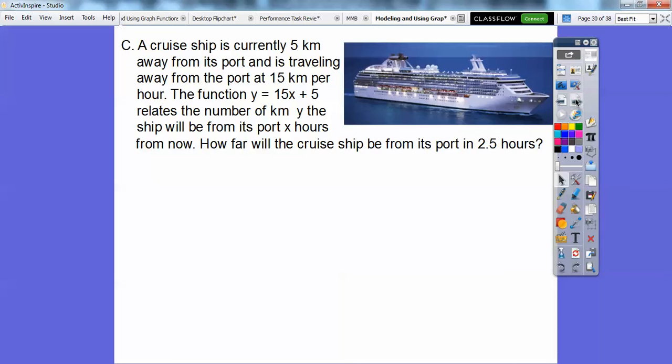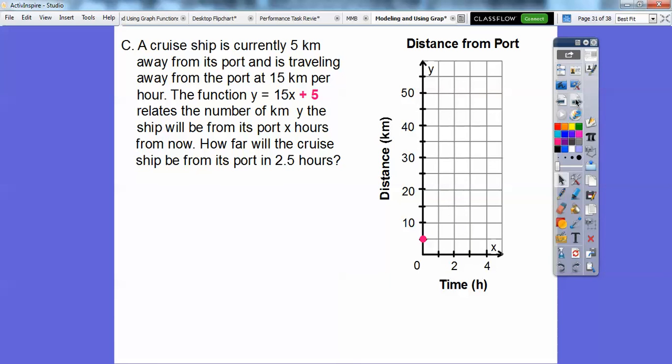Here's another one. A cruise ship is currently 5 kilometers away from its port and is traveling away from the port at 15 kilometers per hour. So the function y equals 15x plus 5 relates the number of kilometers y that the ship will be from its port x hours from now. So how far will a cruise ship be from its port in two and a half hours? Well, let's go ahead and graph this. Here's that plus 5 right there, right there at plus 5.